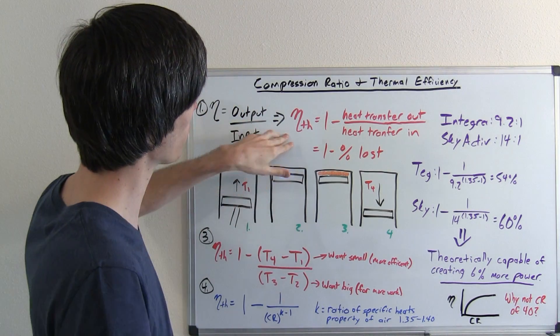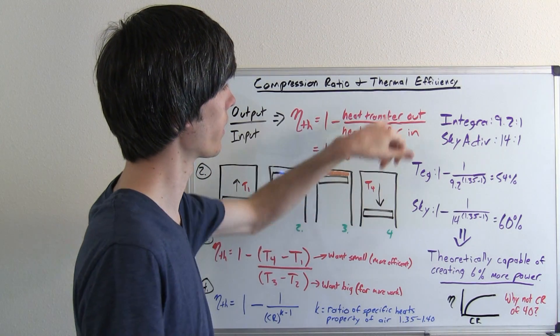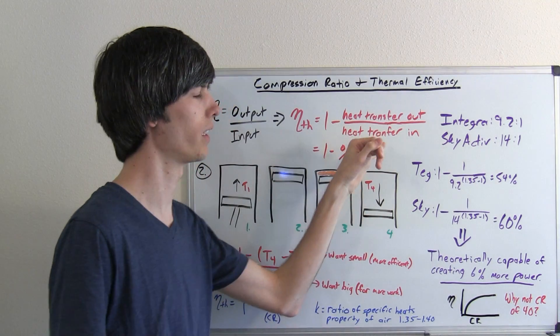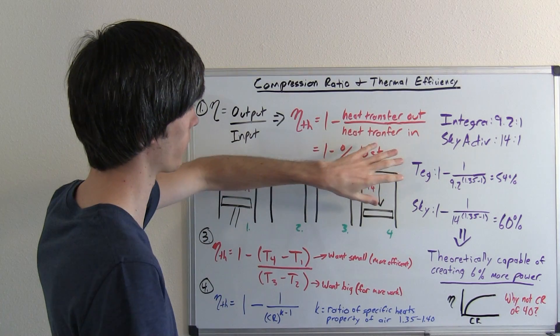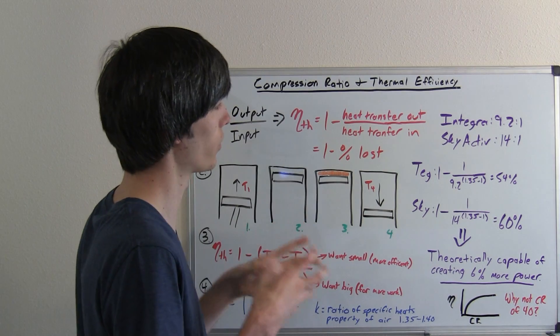So now thermal efficiency, basically you can represent this as one minus the heat transfer out divided by the heat transfer in. Now let's just kind of go over this. So you're going to put in an amount of heat into your engine.